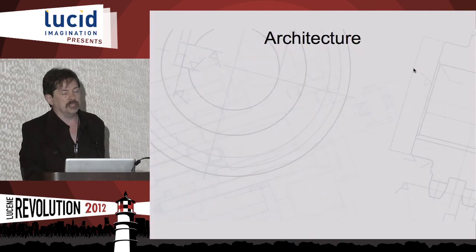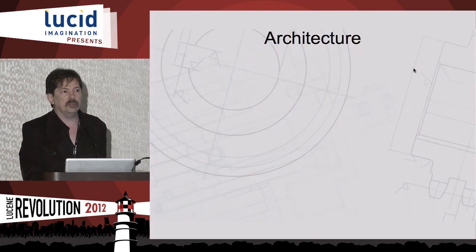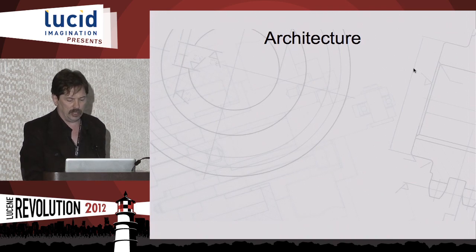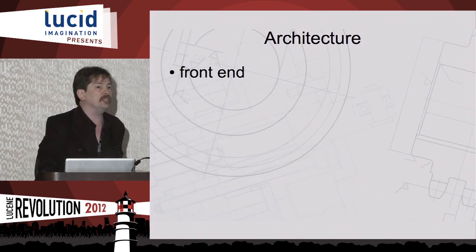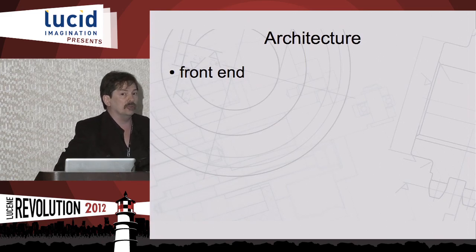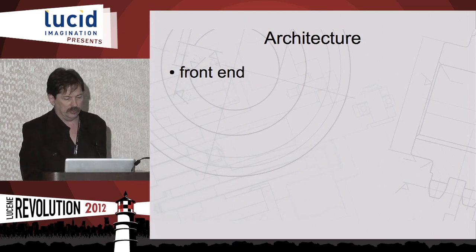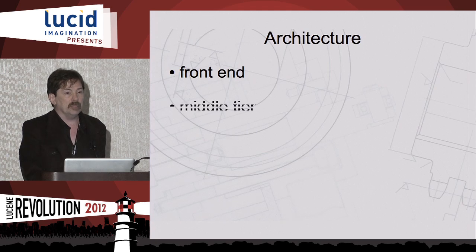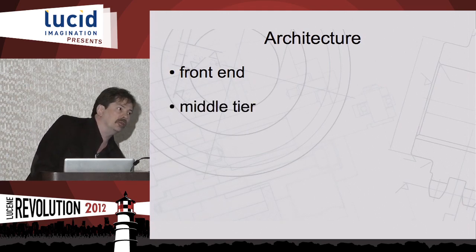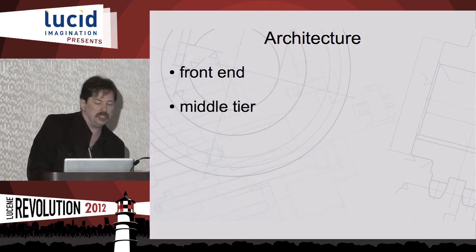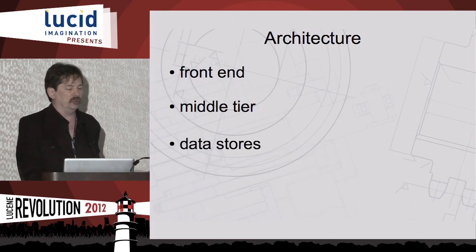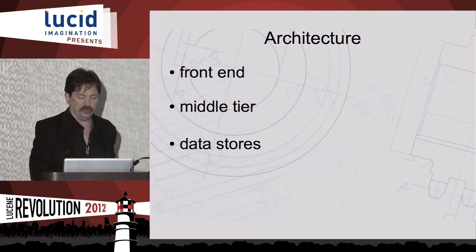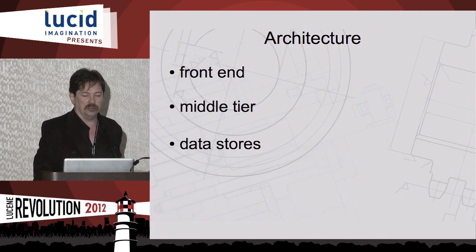Let's deep dive into the architecture, mostly focusing on news feed but also touching on user profile search. We have a front end — not the web tier serving pages, but the front end to the Solr appliances. We have a middle tier including the synchronizer and jobs that keep Solr up to date. And we have data stores: Solr and the MySQL databases that Solr ultimately pulls its information from.